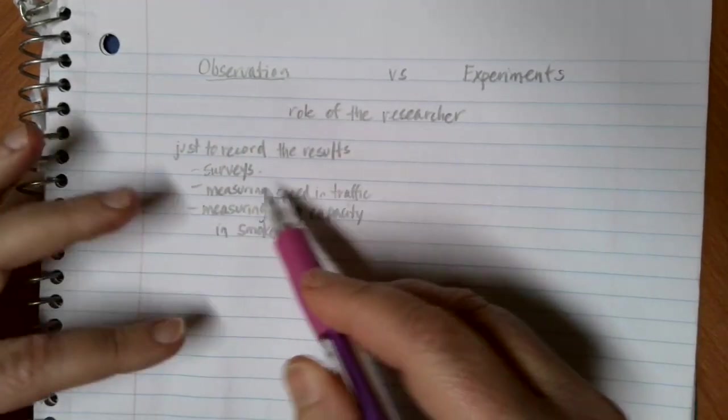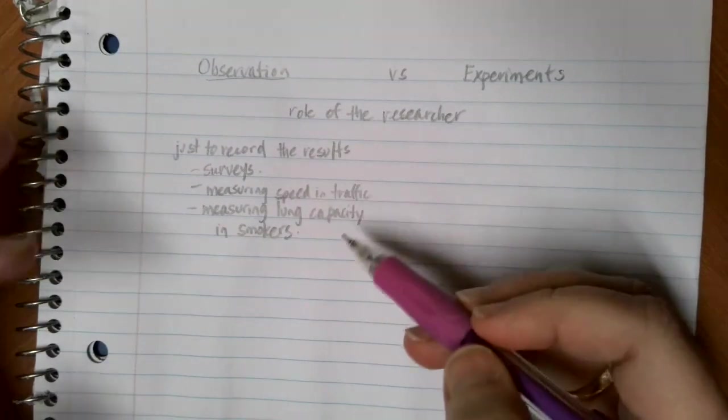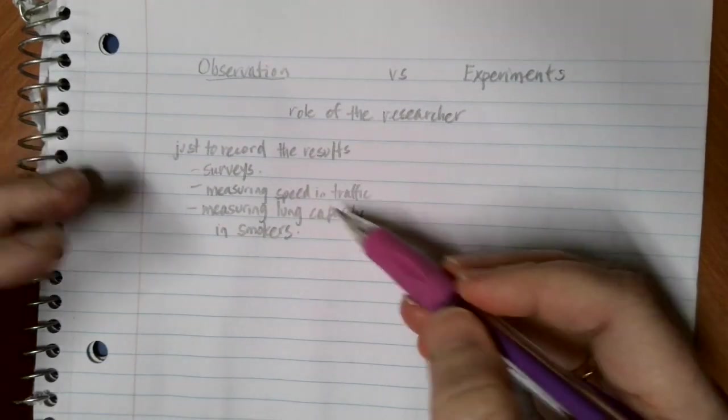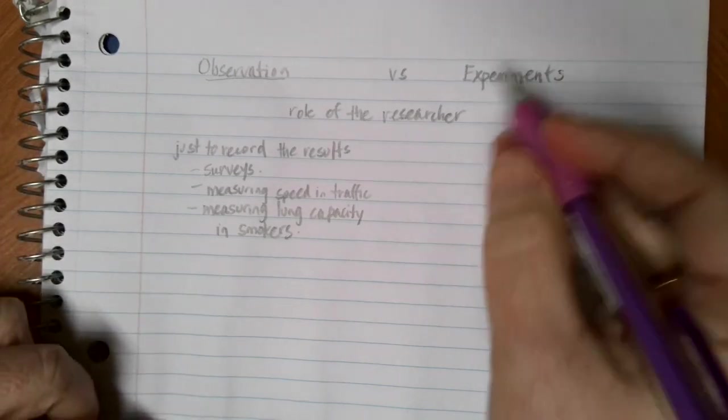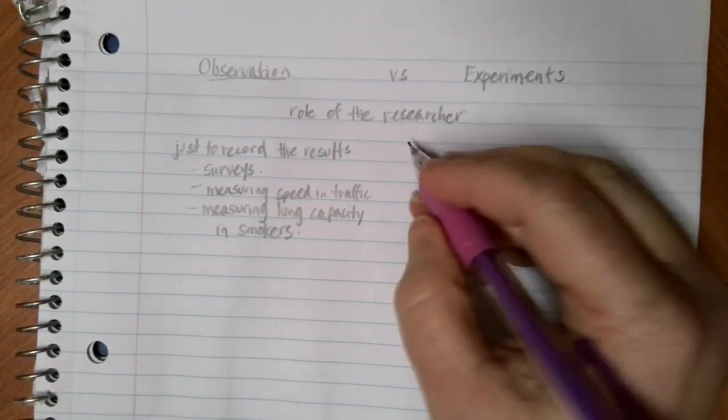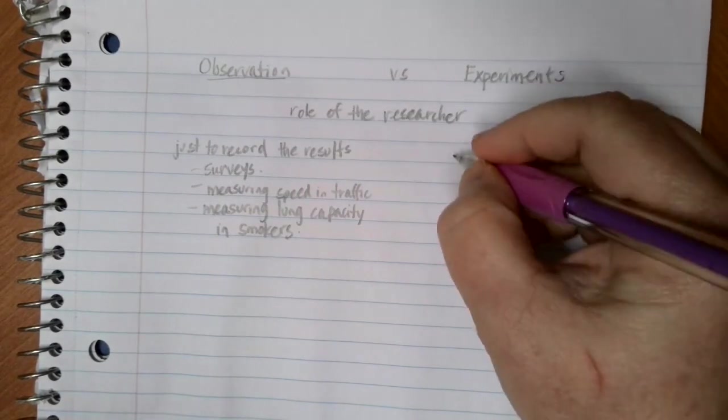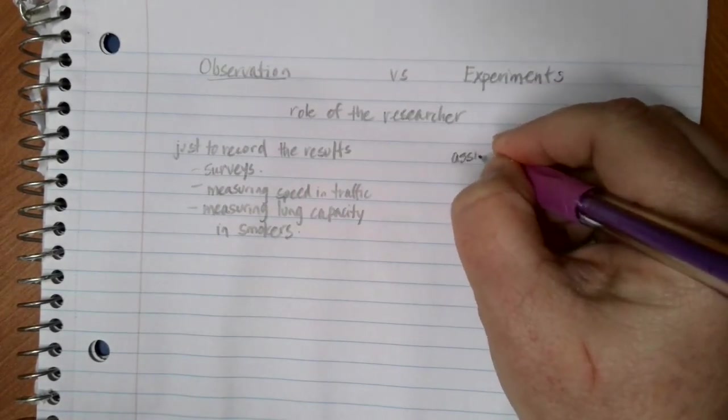We're looking at a situation that's occurring and just recording the results of what's going on. What's different when we're looking at an experiment is that the role of the researcher is to assign a treatment to a group.